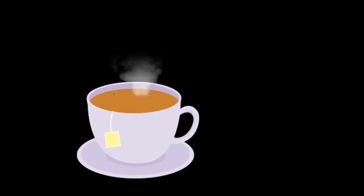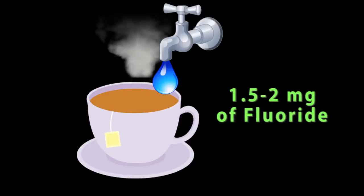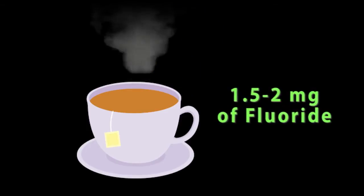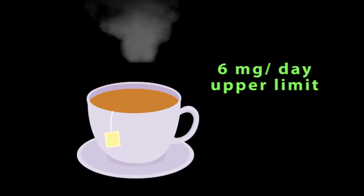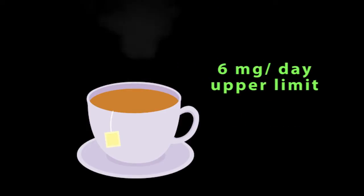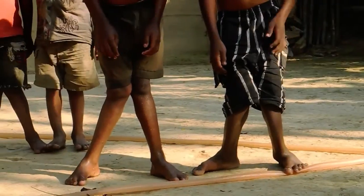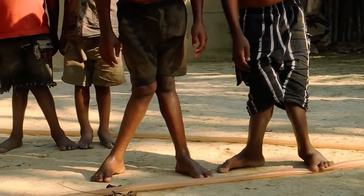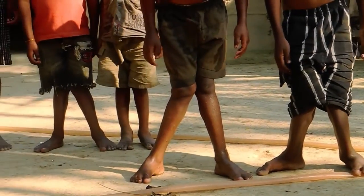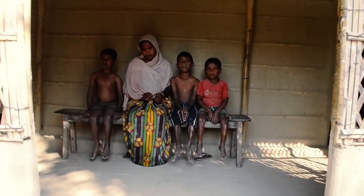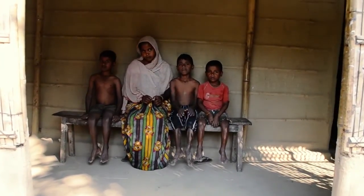Each cup of tea, even when prepared from normal water, gives you 1.5 to 2 milligrams of fluoride, and six milligrams of fluoride a day is the upper limit of normal. These children were given glassfuls of tea and sometimes they drank tea and went to bed. This was the reason for the enormous amount of fluoride they were getting from food and tea.